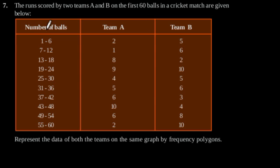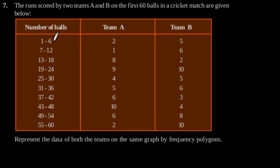By observing the given table we can say that the class interval of the given data is not continuous. For example, the first class interval is from 1 to 6 and the second is from 7 to 12, so there is a gap of 1 in between them. Therefore we need to add 0.5 to the upper class limit and subtract 0.5 from the lower class limit.